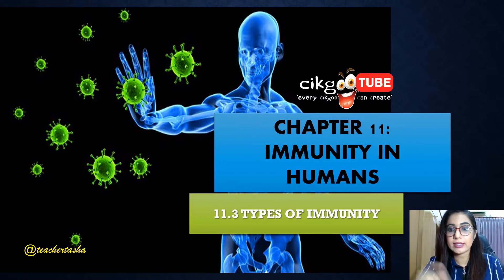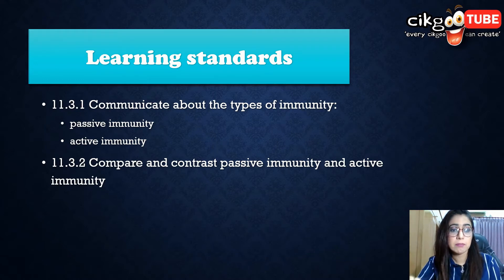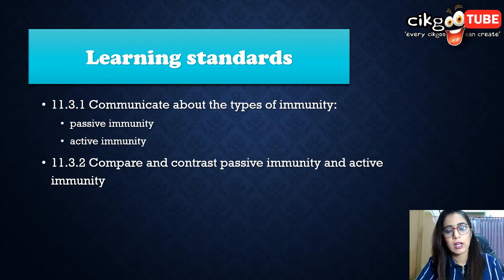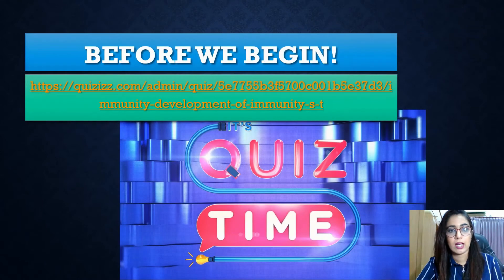Get a pen and paper ready. The learning standard here is that you should be able to communicate about the types of immunity — passive and active immunity — what the examples are, and compare and contrast passive immunity and active immunity.